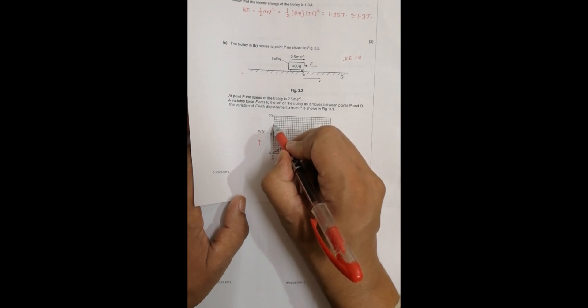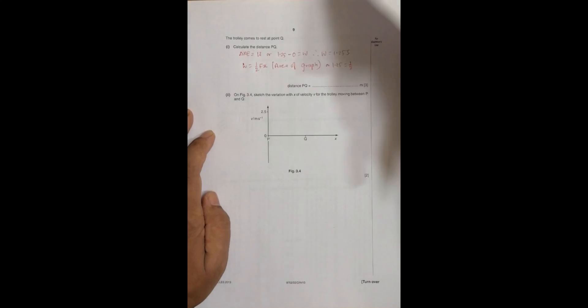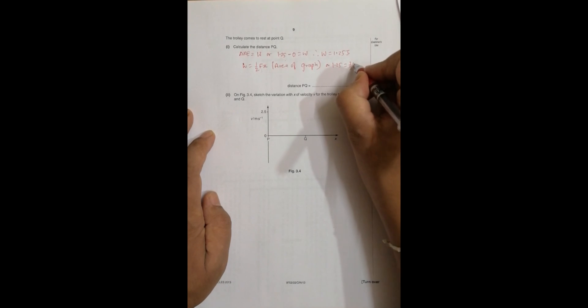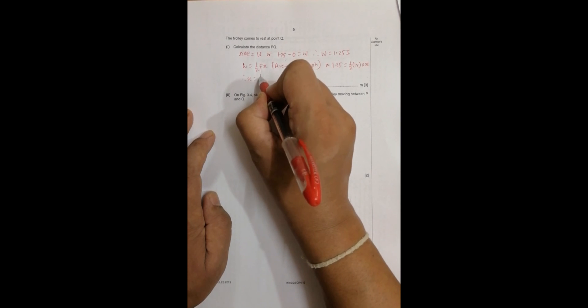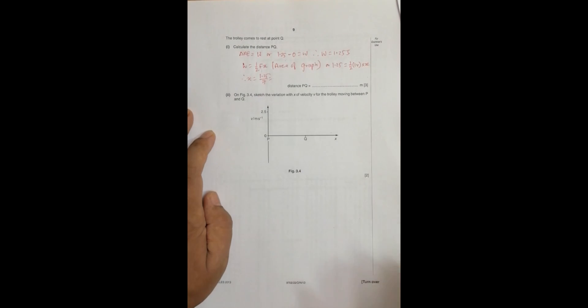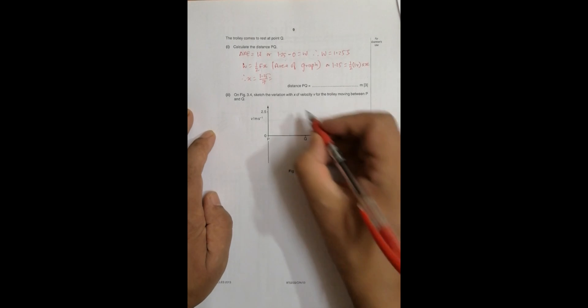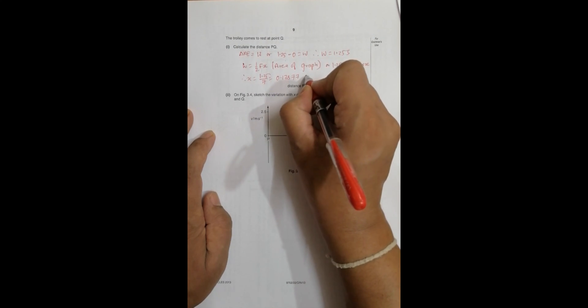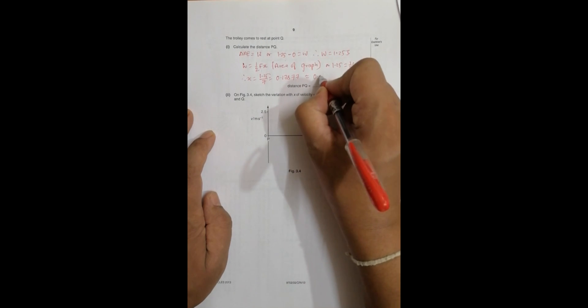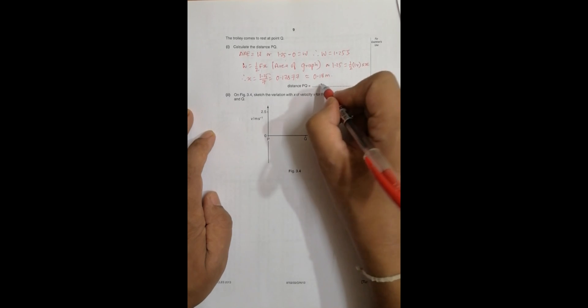So till point Q, the force here is 10, 11, 12, 13, 14, so this is 15, this should be 14. So it is F equals 14, 14 into x. This gives us x equals 1.25 divided by 7, which equals, if I do the calculator, it will be equal to 0.17857, nearly equal to 0.18 meters. So distance PQ is equal to 0.18 meters.